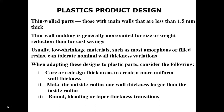Examples of crystalline polymers include polyethylene, PP, nylon, PET, and PTFE. Amorphous polymers include ABS, PMMA, PC, polystyrene, and PVC. When adapting a design to plastic parts, we need to consider coring out or redesigning thick areas to create a more uniform wall thickness.